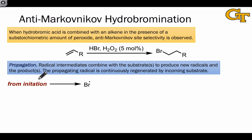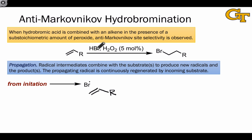The propagation stage of radical hydrobromination of an alkene begins with the propagating radical, Br dot. This radical engages with the alkene in the first step of propagation. It makes sense that the alkene gets involved at this stage, since if Br dot engaged with HBr, a transfer of a hydrogen atom from one molecule to the other wouldn't lead to any productive reactivity. A productive step that gets us closer to the product involves radical addition of Br dot to the alkene.